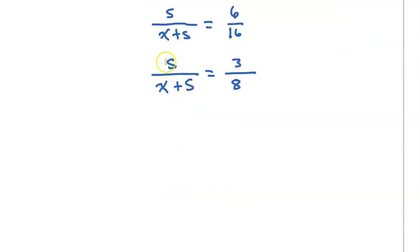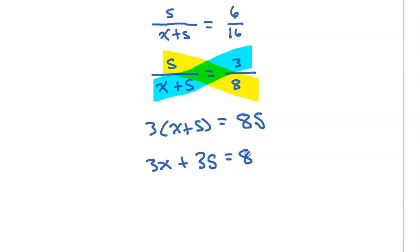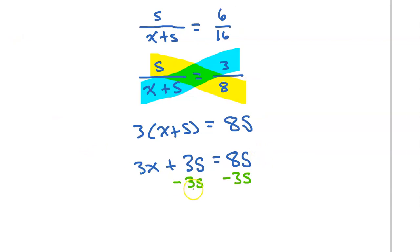I think I will cross multiply so I don't have these fractions anymore. So I'm going to multiply these two and these two and set those equal to each other. So I will have 3 times x plus S is equal to 8S. Doing the distributive property, I have 3x plus 3S is equal to 8S. Trying not to let my S's look like 5's. Subtracting 3S from both sides, we get 3x is equal to 5S. So we needed a relationship between x and S, and here it is.